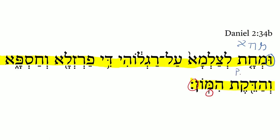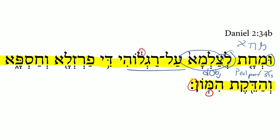This is the pa'al perfect third person feminine singular, and this is the Aramaic verbal root for 'strike.' So she struck — and who is the 'she'? It's the evan, the stone that we had come across previously. So the stone struck whom? Here we have the lamed preposition that is the direct object marker, and it's the image that we've been talking about. So the stone struck the image upon its feet, and there we have the za'kev katon for a pause.